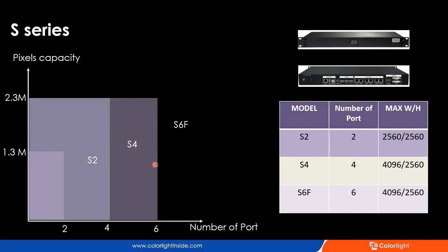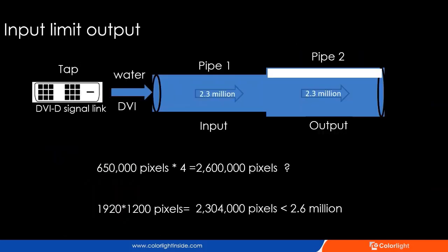Looking at this graphic, X-Series models support roughly 1.3 million pixels and 2.3 million pixels respectively. About X6F, it has the same capacity as X4. In some fine-pitch projects, it has the advantage of wiring with six outputs, so we don't need to add another sender when the resolution reaches 2K. You may have a question: why is the capacity of two output ports 1.3 million pixels, and X4 with four output ports is 2.3 million pixels, but not 2.6 million?